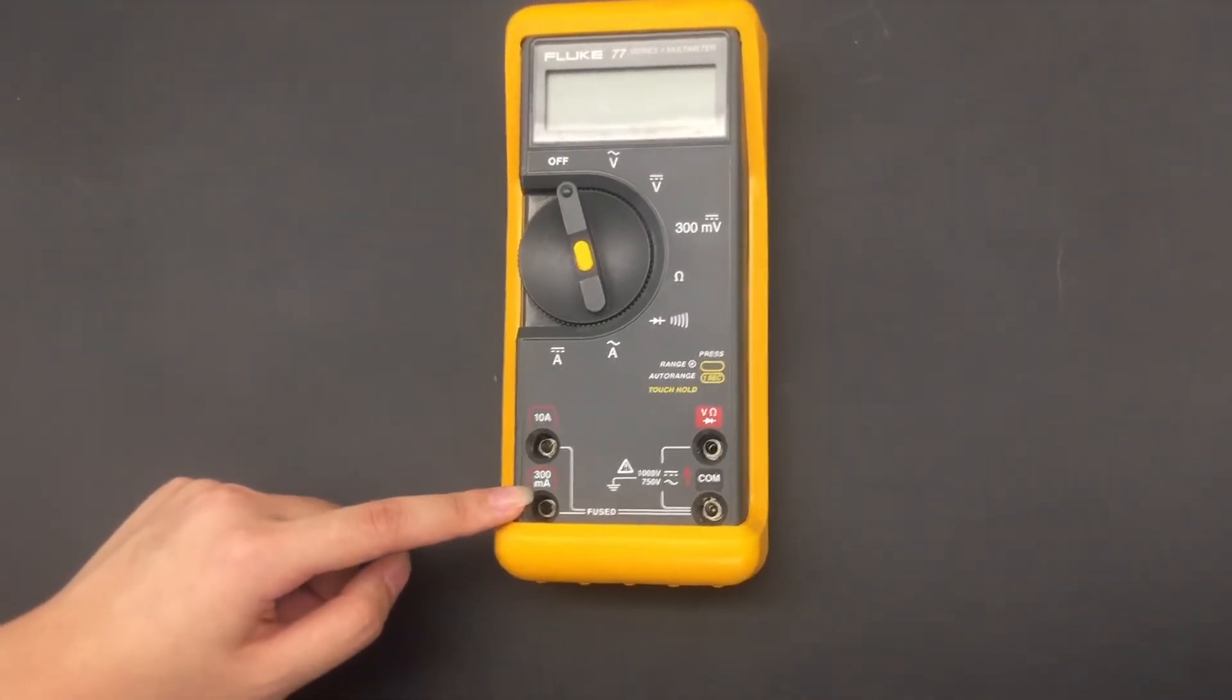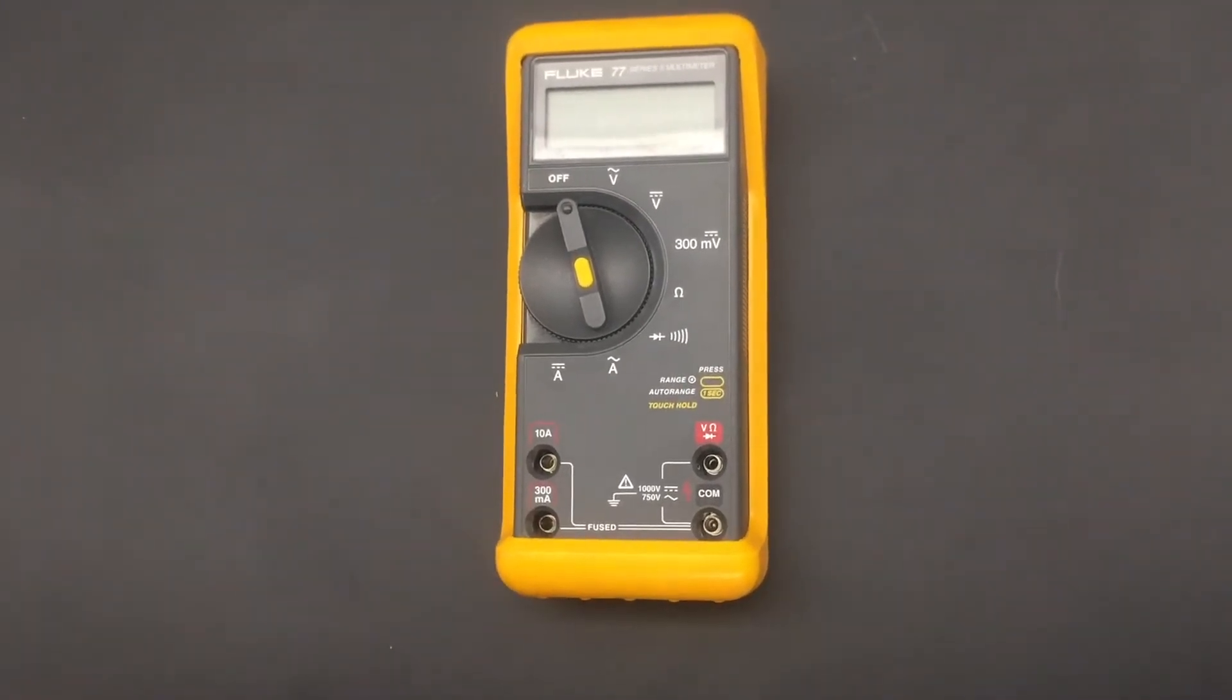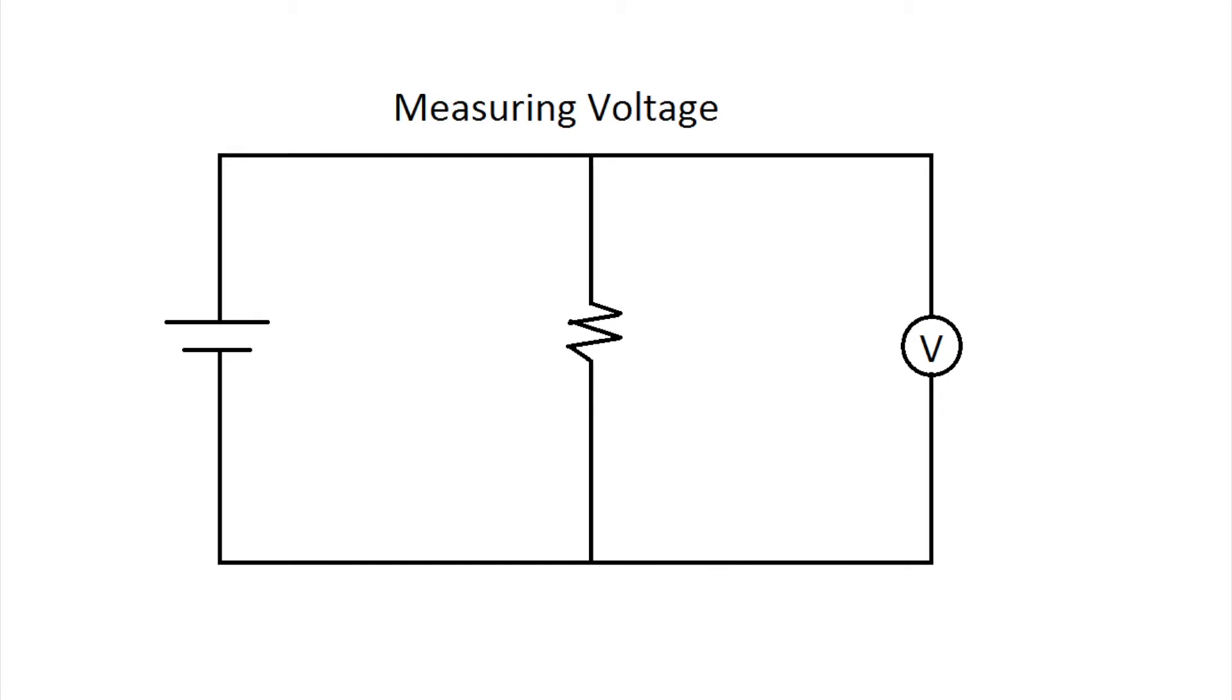To measure voltage across a resistor, the multimeter should be in parallel with the resistor. To measure current across a resistor, the multimeter should be in series with the resistor.